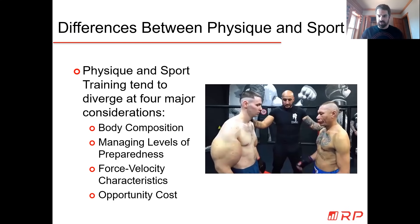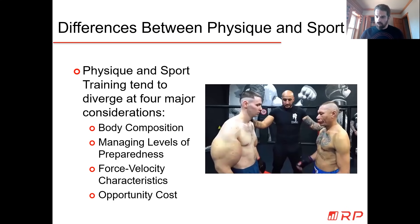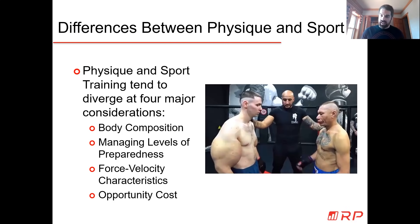First: body composition - this might be the most important difference we see, with the biggest practical implications. If you're a physique person, within the constraints of your lifestyle, you're trying to be as lean and muscular as those things allow. That is not necessarily the goal for sporting athletes. In sports, we have to deal with things like optimal competition body weights and body compositions. Sometimes that means increasing lean body mass, sometimes decreasing fat, sometimes both.